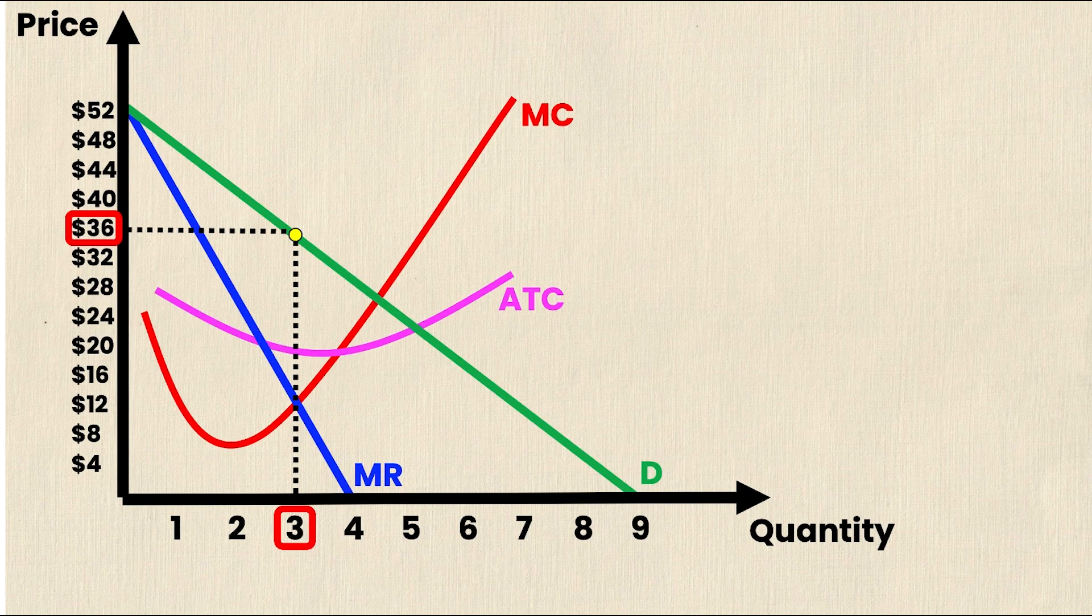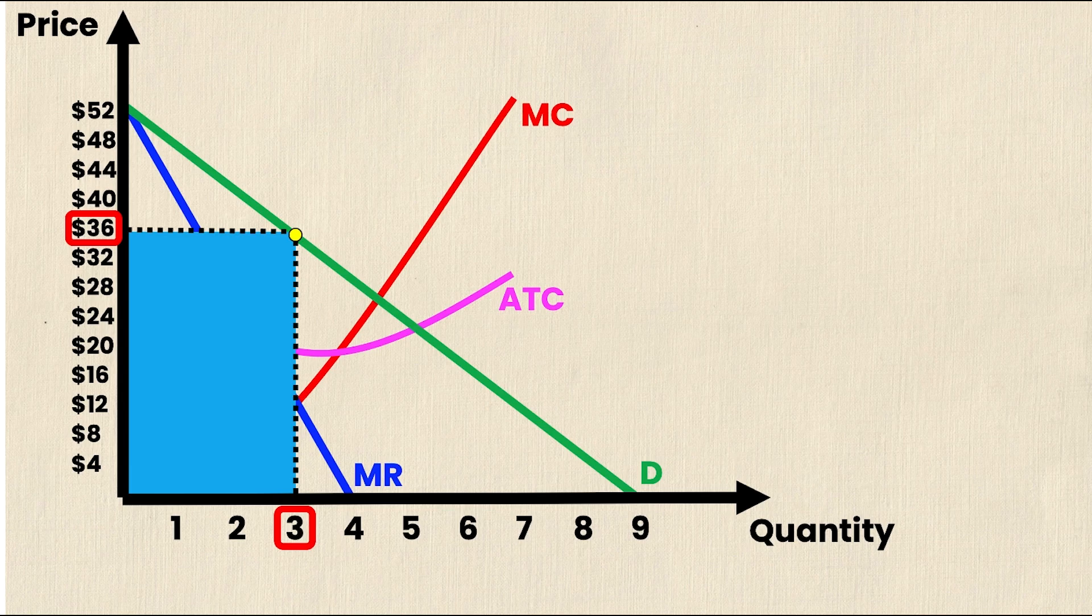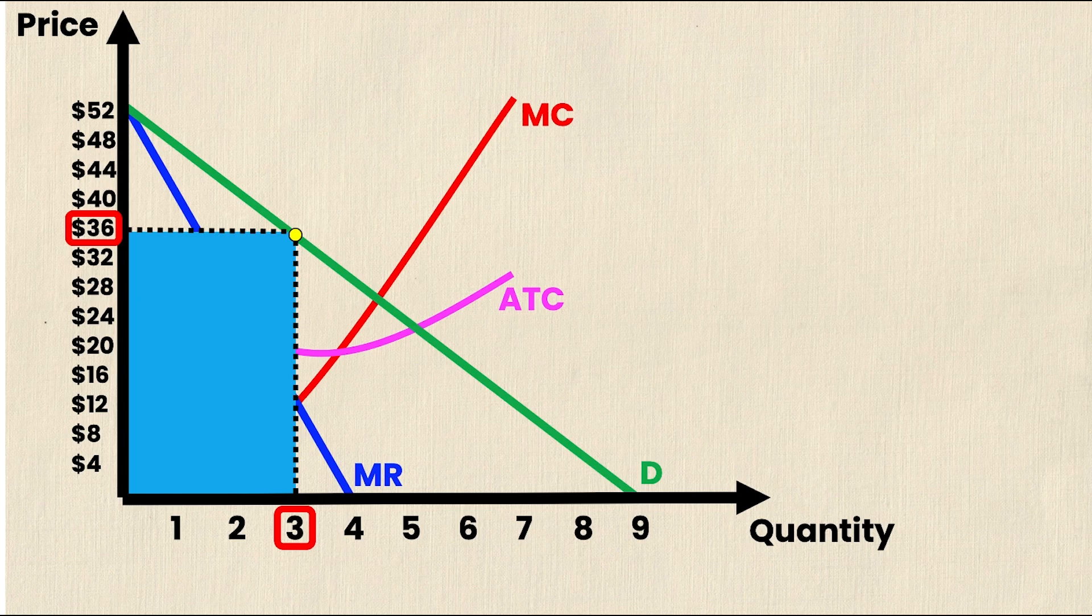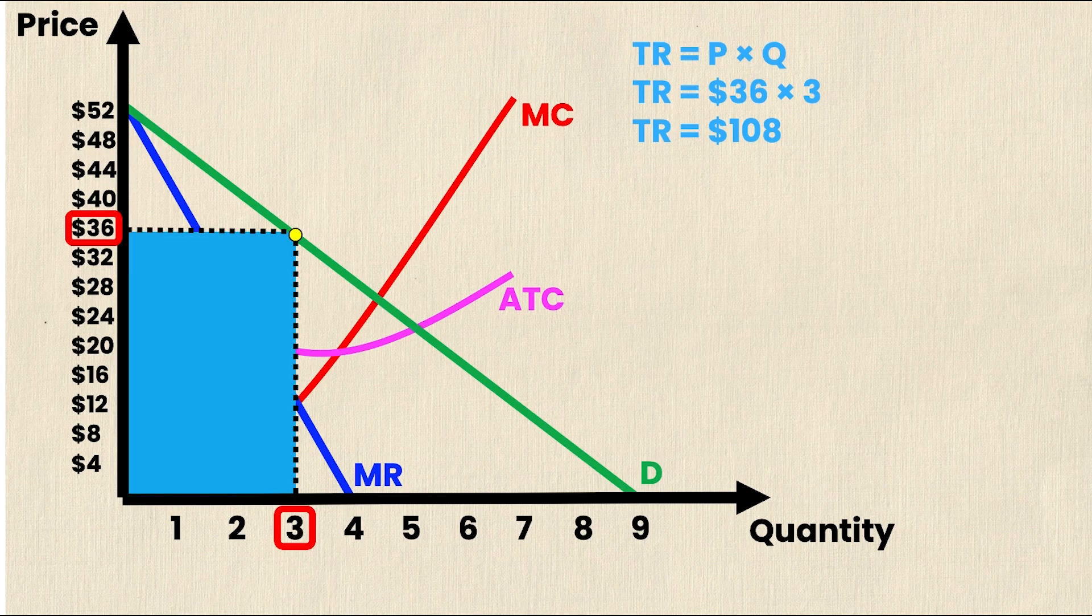So when looking at this graph, you can obviously see a big blue rectangle. And that big blue rectangle is not profit. Instead, it's actually total revenue. And remember, total revenue is equal to the price charged times the quantity sold. So total revenue in this case is equal to $36 times 3 units. Total revenue is equal to $108.